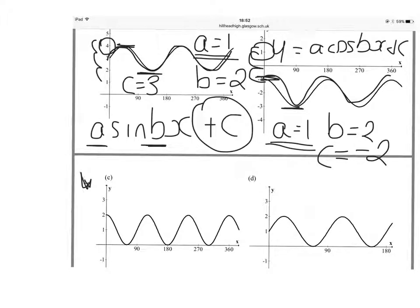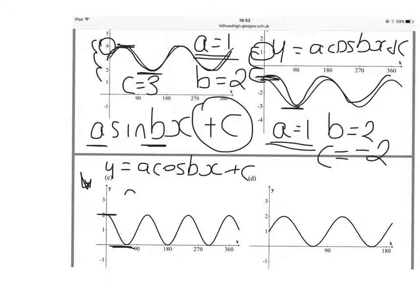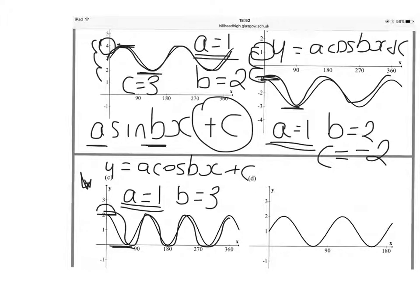This one down here is of the form A cos Bx plus C. The curve goes up to 2, down to 0. That's a total height of 2. Half that, and I get 1 — A is equal to 1. There are 1, 2, 3 complete curves in 360, so B is equal to 3. The curve should go up to its amplitude of 1, but it goes up to 2. Therefore, it's been moved up 1 unit, and C is equal to 1.